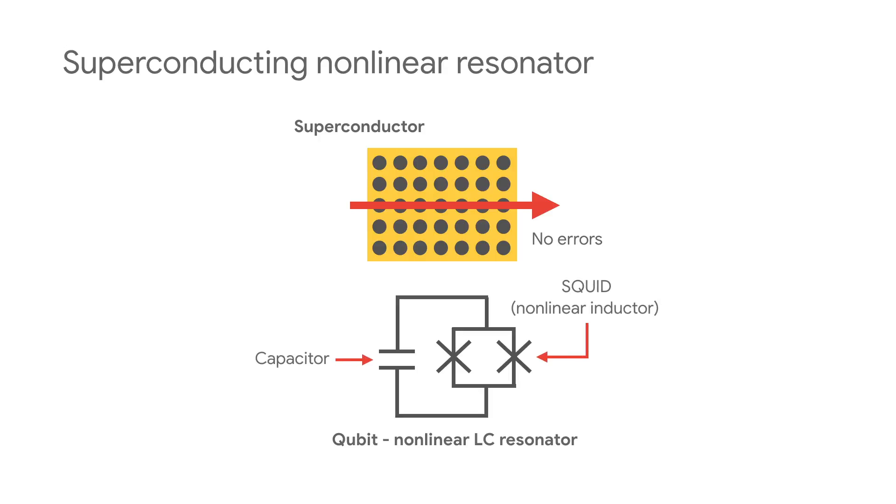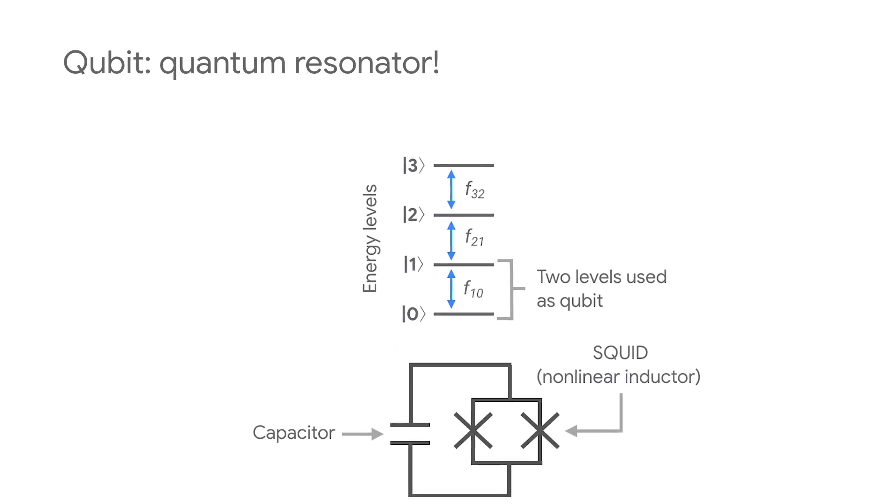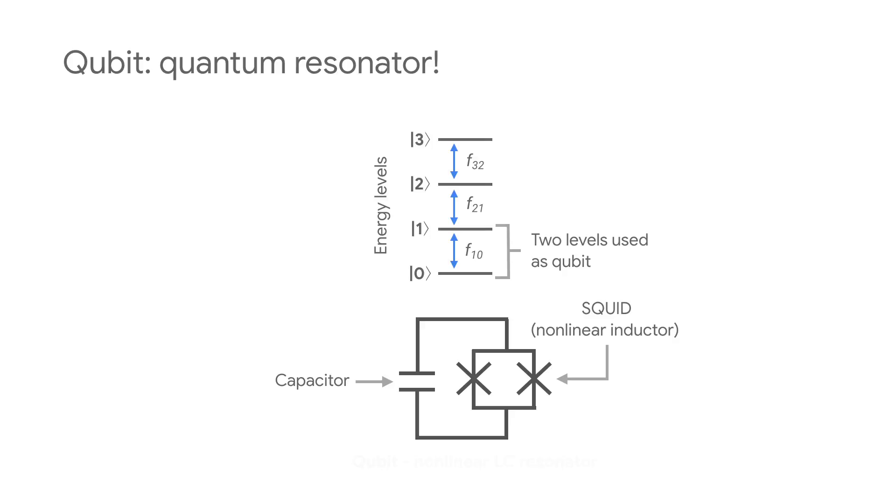Our quantum bits are in fact just electrical oscillators built from aluminum, which become superconducting when cooled to below 1 degree Kelvin. The oscillators store tiny amounts of electrical energy. When the oscillator is in the zero state, it has zero energy. When it's in the one state, it has a single quantum of energy. The two states of the oscillator with zero or one quantum of energy are the logical states of our quantum bit, or qubit for short.